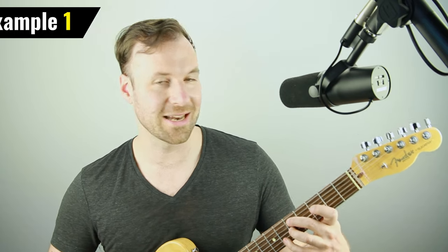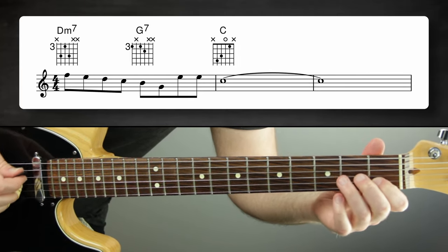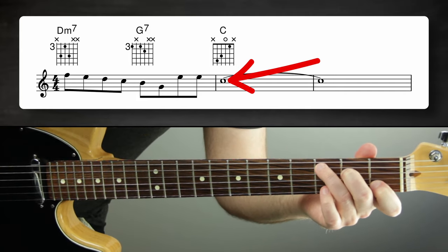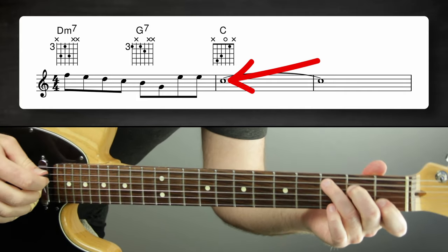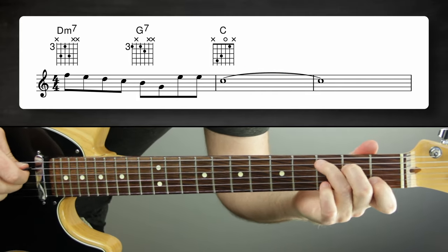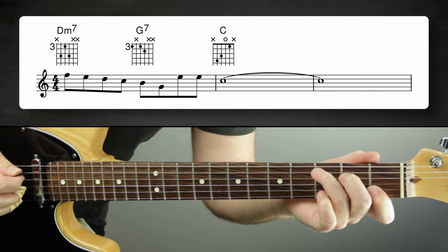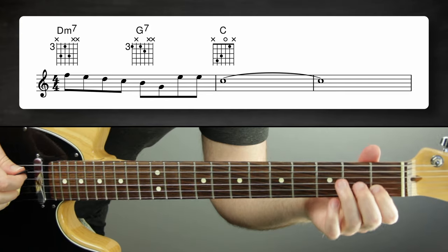Example one is the straight up, normal, not reharmonized, not delayed version. We'll do a 2-5-1 in C major. That final note is the tonic, and that's the note we're going to reharmonize each time to delay the resolution. I'll sing along so you can hear the melody over the chord.